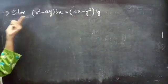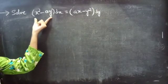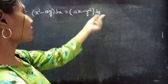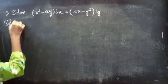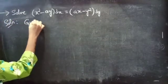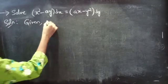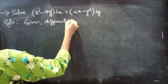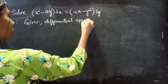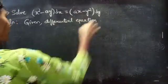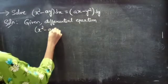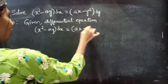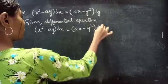Problem: Solve x squared minus ay into dx equals to ax minus y squared into dy.